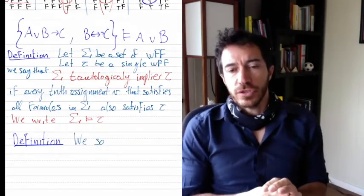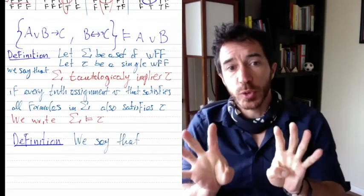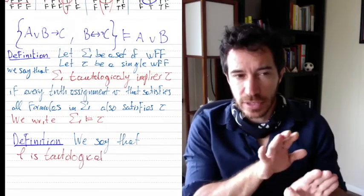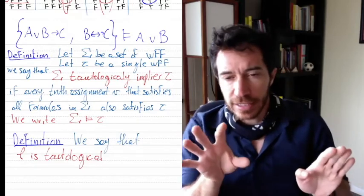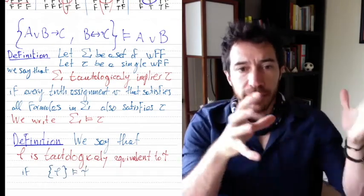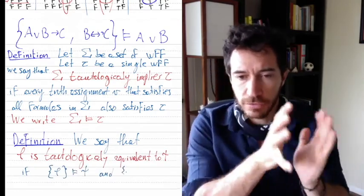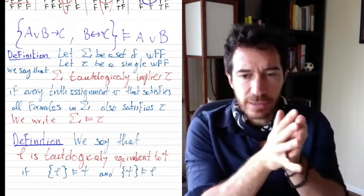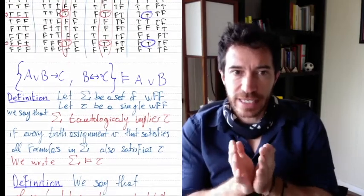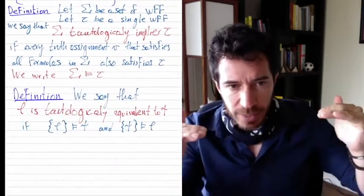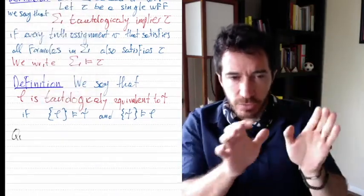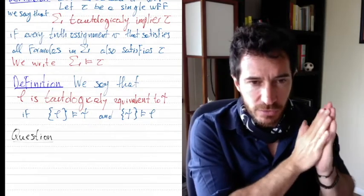Let's look at one more definition. We say that two well-formed formulas are tautologically equivalent — phi is tautologically equivalent to psi — if each one tautologically implies the other. So phi implies psi and psi implies phi, meaning they are true in exactly the same rows; they have the same truth values for all possible truth assignments for the variables.